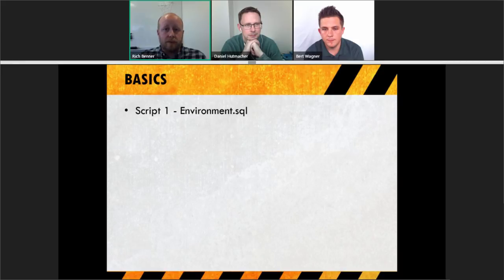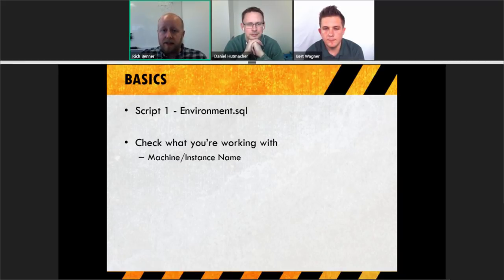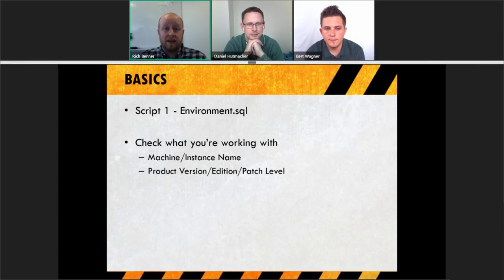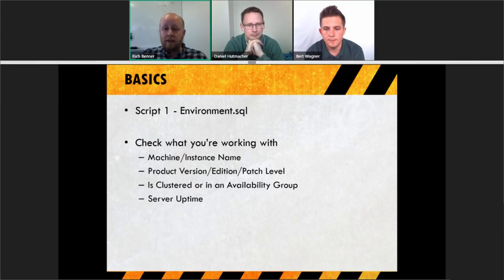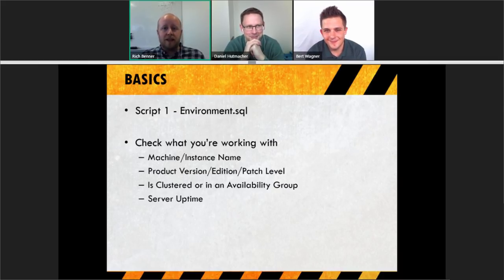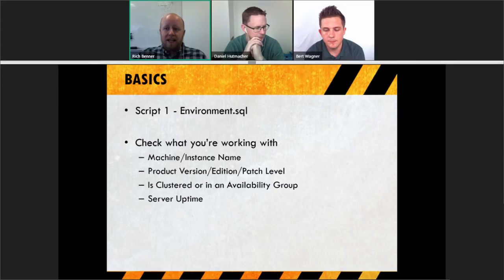Script one is called environment.sql. It gives you the instance name, machine name, product version — so you know if it's SQL Server 2008 versus 2017 — whether there's an HA/DR solution, whether it's clustered or in availability groups, and how long the server has been up. Server uptime is important because people like to reboot a slow SQL Server, which loses performance counters. If they rebooted this morning, I know to take perf counters with a pinch of salt.